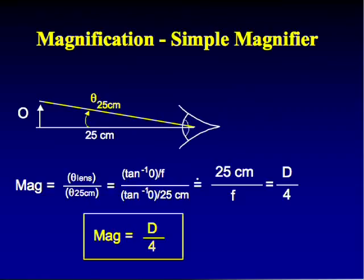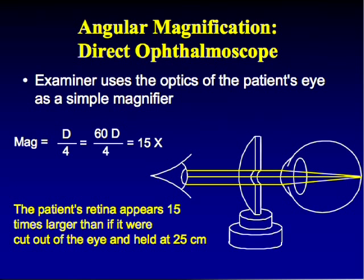If you change the reference distance to 40 centimeters, use D times 0.4 instead of D times 0.25. When you use a direct ophthalmoscope on an emmetropic patient, the eye's 60 diopter front surface acts as a hand magnifier: 60 over 4 equals 15x. So the optic disc appears 15 times larger than it would at 25 centimeters.